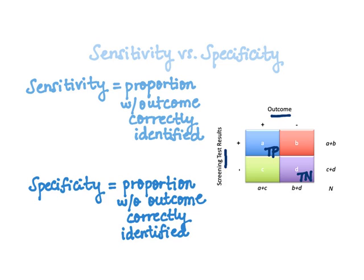Having defined these, we can yield the formula for sensitivity: A (true positives) divided by the total of that column, A plus C (total individuals with the outcome). Whereas for specificity, this equals D (true negatives) divided by the total of that column, B plus D (total individuals without the outcome).